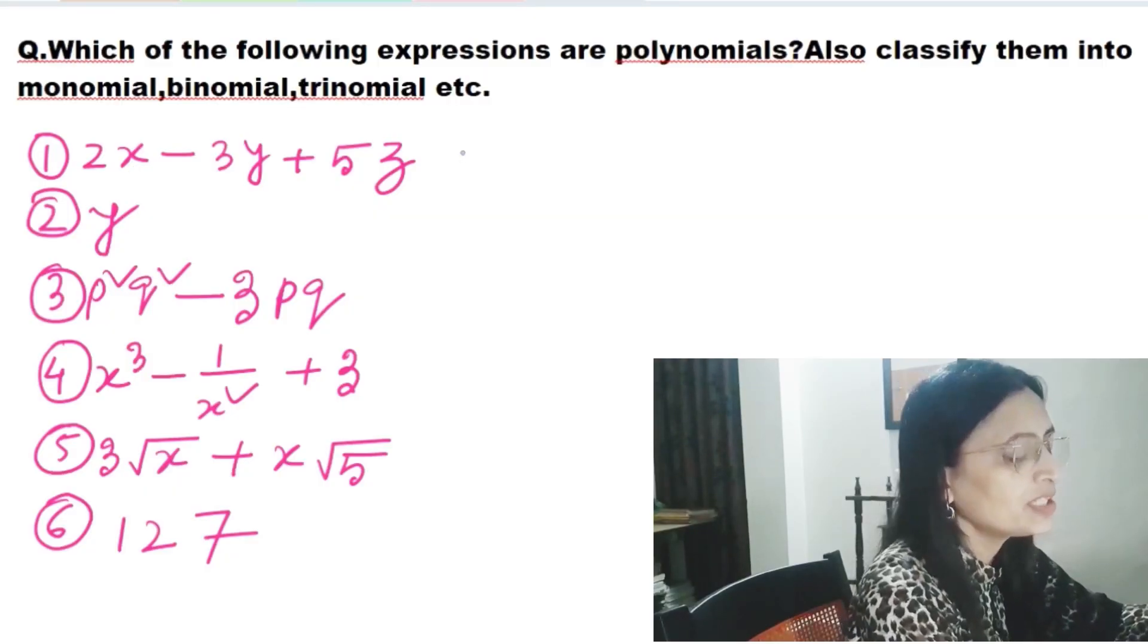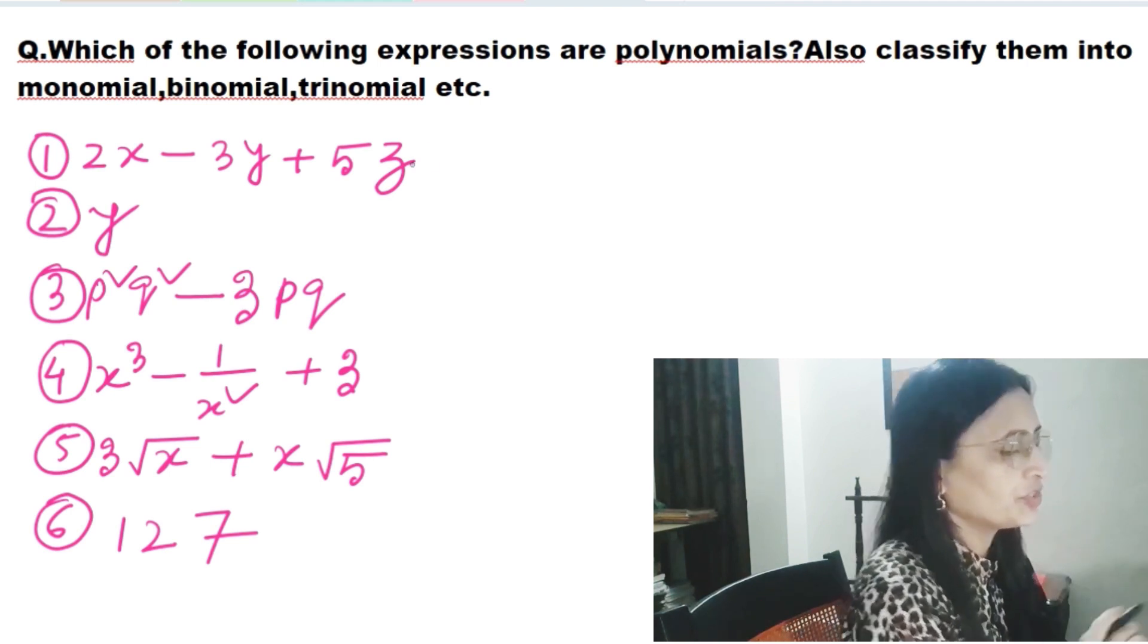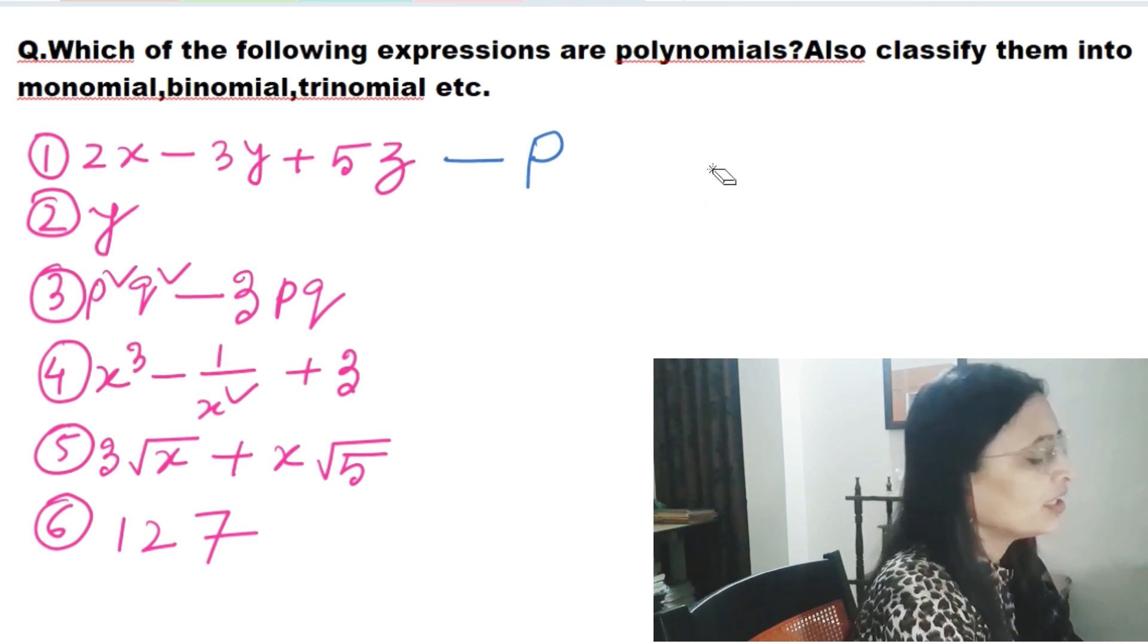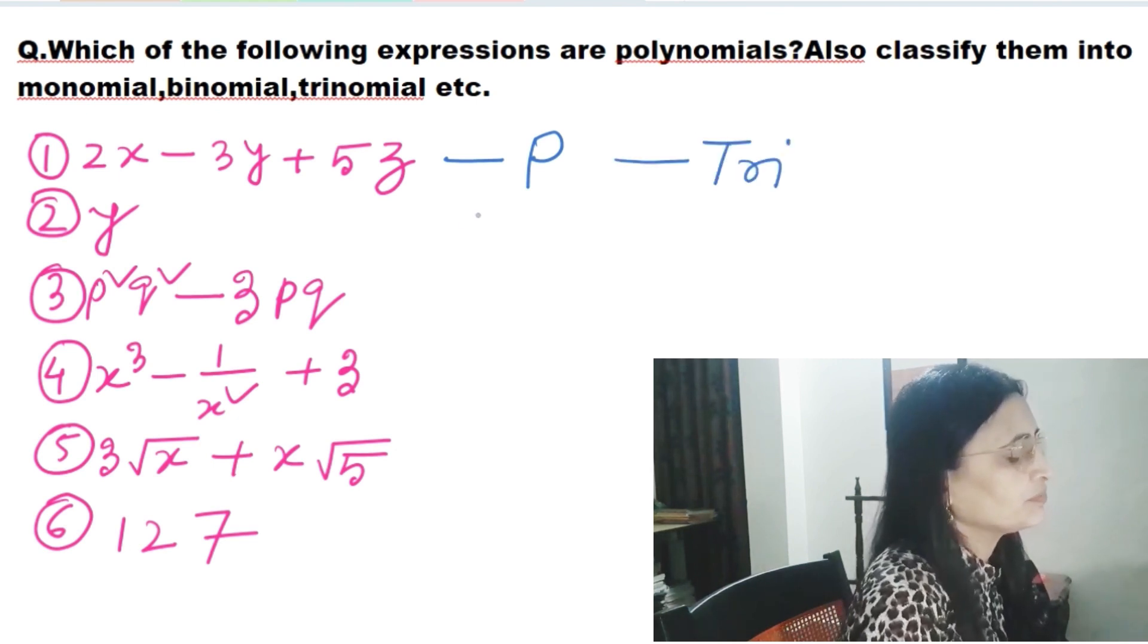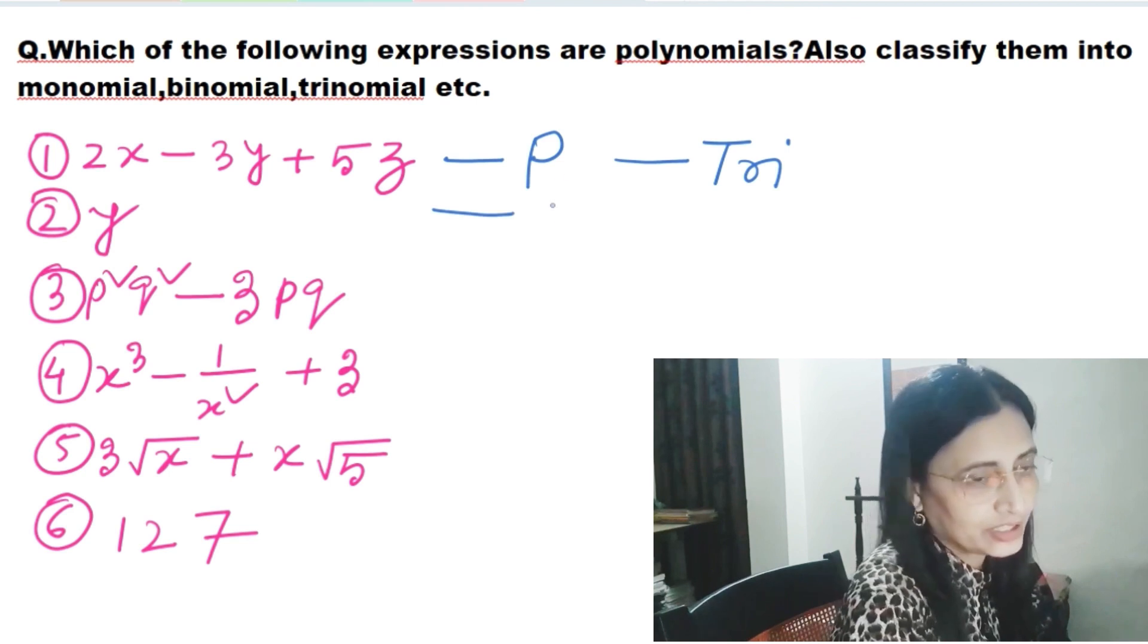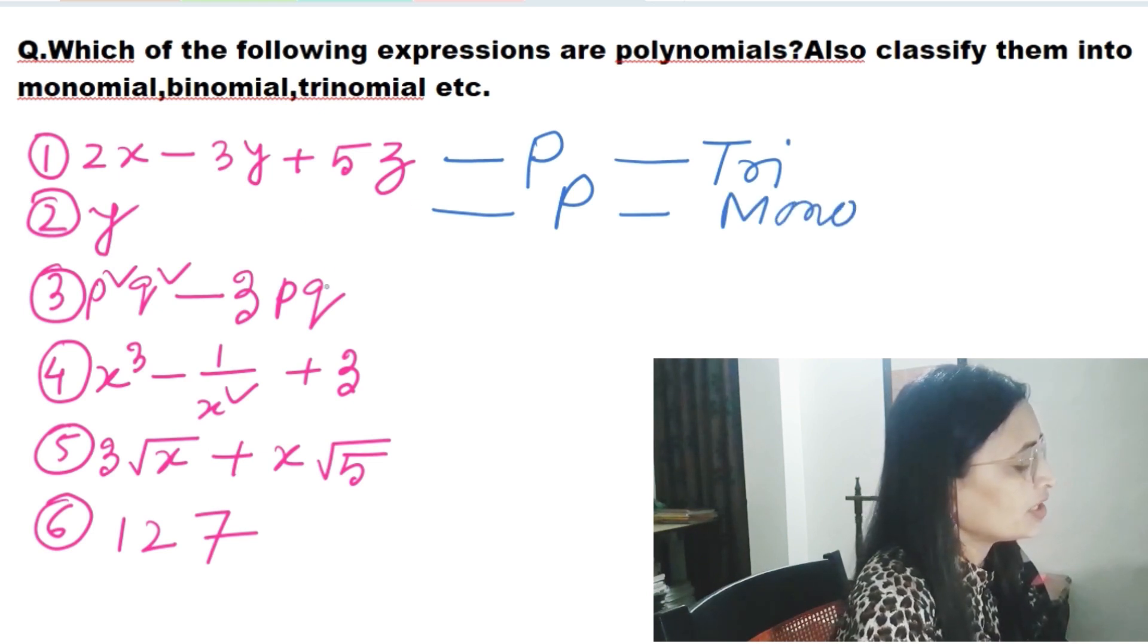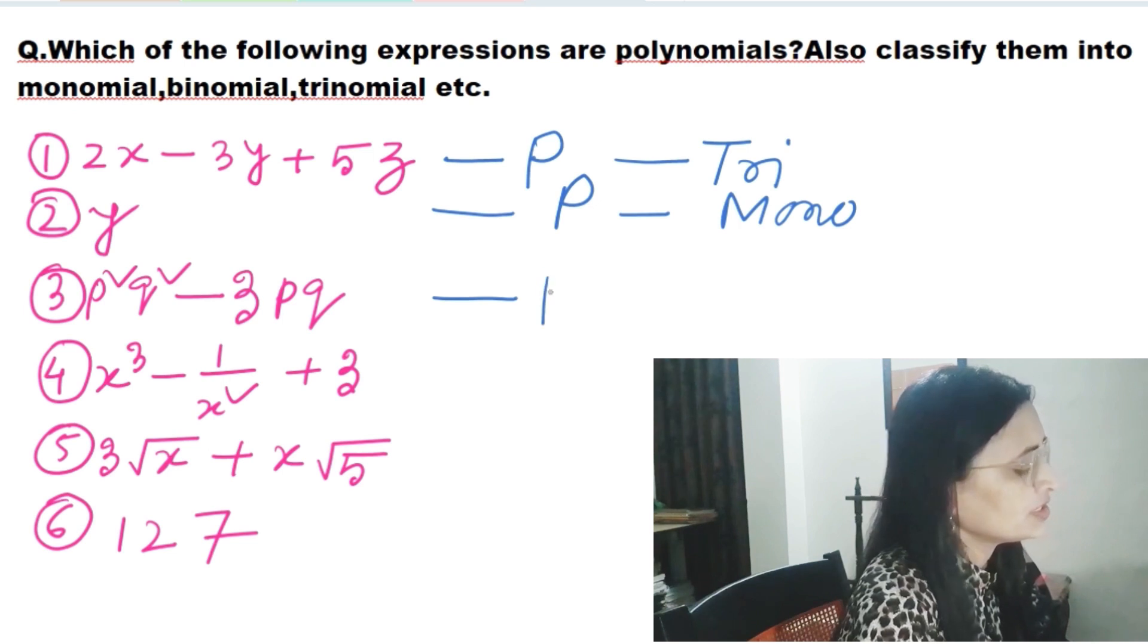Question number three: Which of the following expressions are polynomials? Also classify those polynomials into monomial, binomial, trinomial, etc. In the first expression, it contains constants two, minus three, five, variables x, y, z, and is connected with arithmetic operations plus and minus. So obviously it's a polynomial. As it contains three terms, it will be a trinomial. Next one is y: it is a single term, a constant and variable y, so it is a monomial. Next: p square q square minus 3pq. Variables are p and q, connected with arithmetic operation. This is also a polynomial and contains two terms, so this is a binomial.